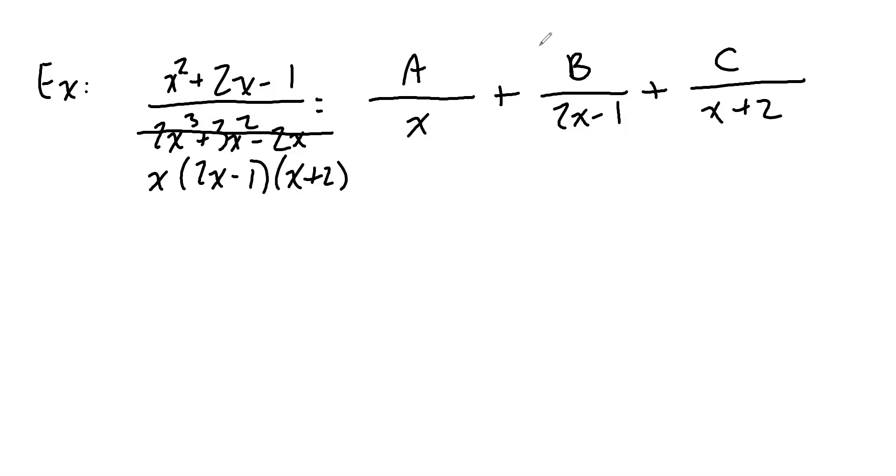So it's the same function just factored. Let's clear out the fractions. The standard way of clearing out fractions in a rational equation is you multiply everything by all the different denominators. So we're going to multiply everything by X, 2X minus 1, and X plus 2.